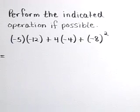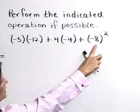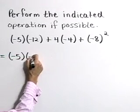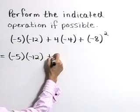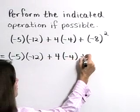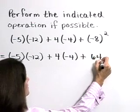Use the order of operations to simplify. I think we'll start right here with this negative 8 quantity squared. So writing each line, negative 5 times negative 12 plus 4 times negative 4 plus negative 8 times negative 8 is a positive 64.